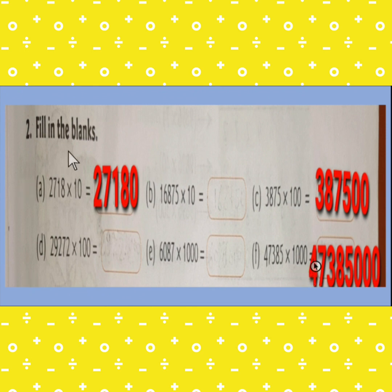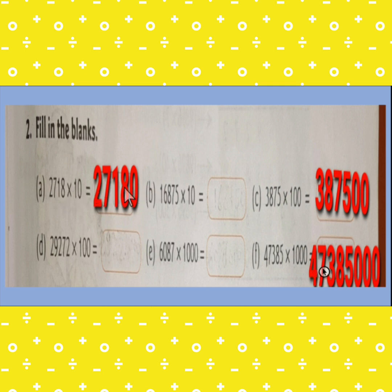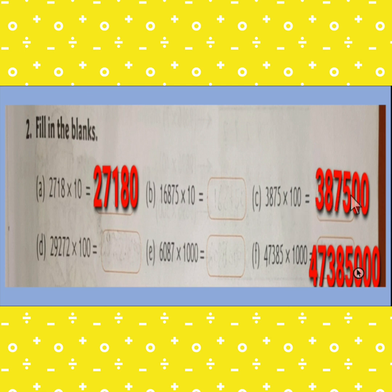Next is Question 2, filling in the blanks, using the properties of multiplication by 10, 100, and 1000. For 2718 multiplied by 10, we put one zero on the right side and get 27,180. For multiplication by 100, we put two zeros after the number — so 3875 multiplied by 100 gives 387,500. For multiplication by 1000, we put three zeros on the right side of the given number.